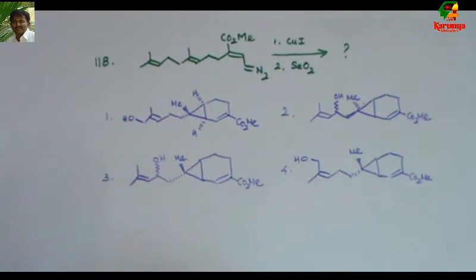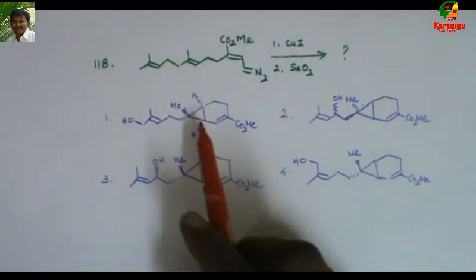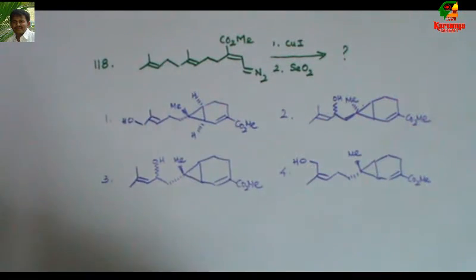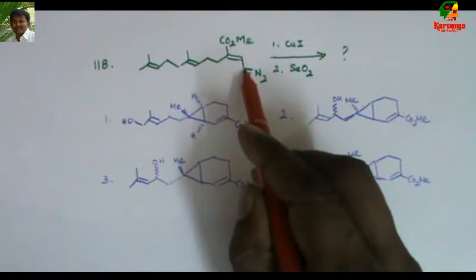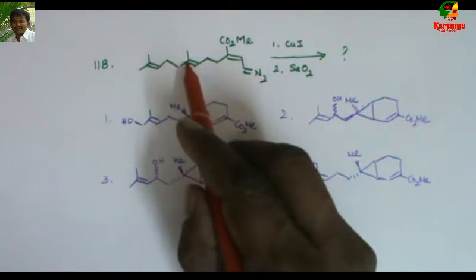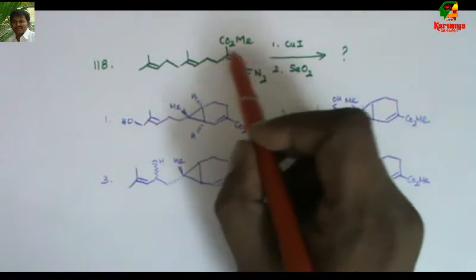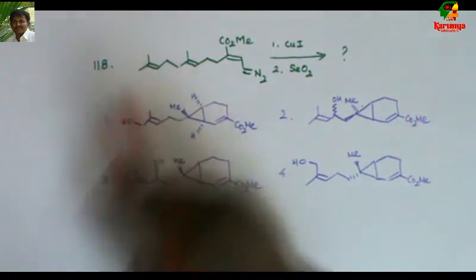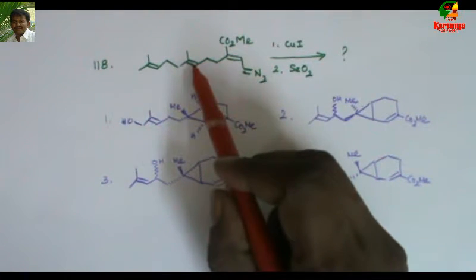The given options are here. All four are cyclopropane products. You can see here this has undergone cyclopropanation with this double bond. This double bond is unaffected, this double bond also is unaffected. So this undergoes cyclopropanation.